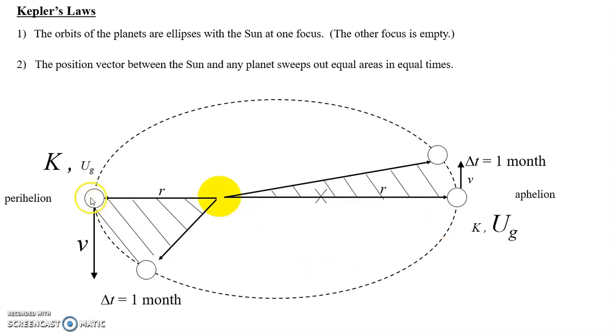Here the object, the planet, wants to be closer to the Sun, so it's less gravitational potential energy. Here it's farther away, so there's more gravitational potential energy, farther from where it wants to be.